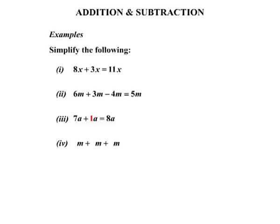Example 4, m plus m plus m. Well, again, they are all singular m. We can think of them as being 1m plus 1m plus 1m. And they are all the same, they are all m, so they are all like terms. So we can add 1m plus 1m plus 1m would equal 3m.